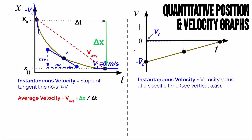On a velocity-time graph, if an object starts at some initial velocity and ends at some final velocity with uniform (constant) acceleration, the velocity changes linearly. In that case, the average velocity is simply the midpoint between the initial and final velocity. For example, if you go from negative 4 m/s to 0 m/s, the average velocity is negative 2 m/s. In equation form: average velocity = (initial velocity + final velocity) / 2. This only applies for uniform acceleration.